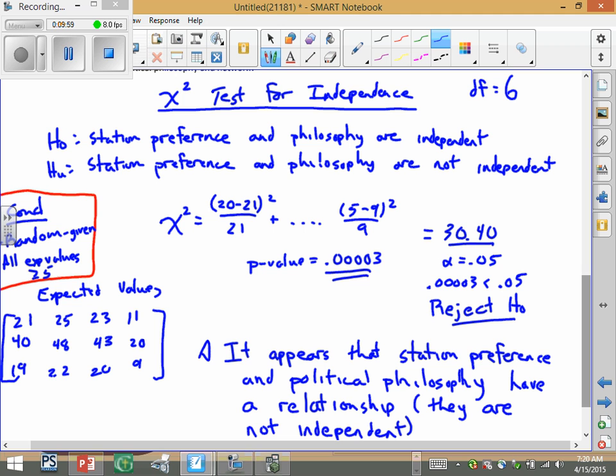So I went ahead and I filled this particular chunk in. Went back and looked at that matrix B to fill this in. Realized all those expected values are greater than five. So both my conditions were met. And then I went back and I filled in a couple pieces of the formula. And you're done.